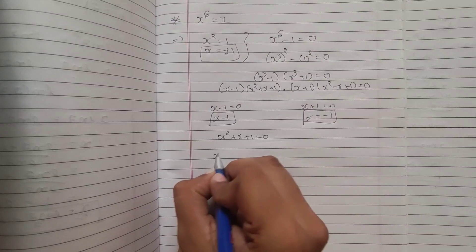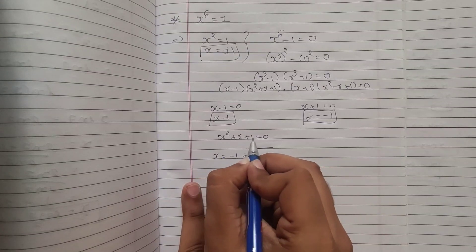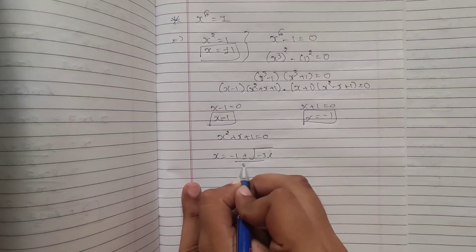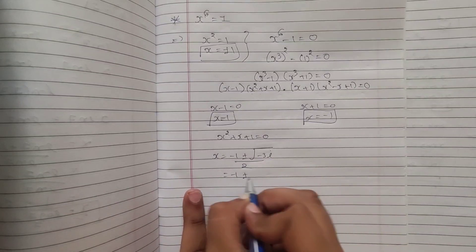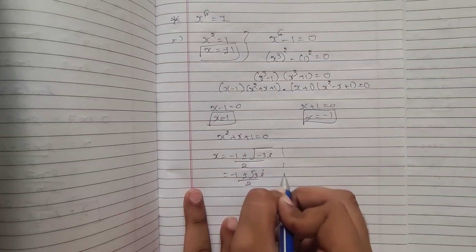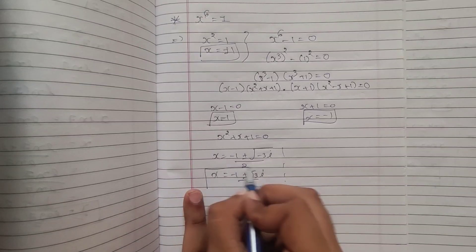then I will get minus 1 plus or minus root of b squared minus 4ac, which is minus 3i divided by 2. So, I can rewrite this as minus 1 plus or minus root 3 i divided by 2. This is our first answer. First two answers, right. Plus or minus, we will get two answers here.